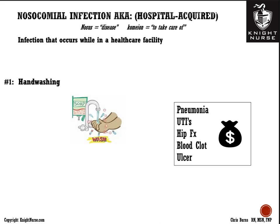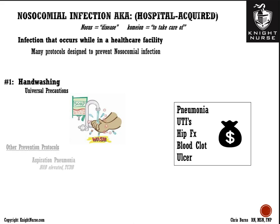Prevention strategies include hand washing, universal precautions with gloves when handling secretions or blood, and specific protocols. Aspiration pneumonia protocols require head-of-bed elevation, turning, coughing, deep breathing, and early mobilization. DVT prophylaxis includes mobilization, hydration, heparin administration, and compression devices on the legs. Ulcer prophylaxis involves giving patients — even those without ulcer history — a proton pump inhibitor (PPI, ending in '-prazole') to prevent stress ulcers during illness.